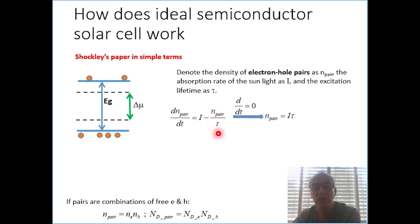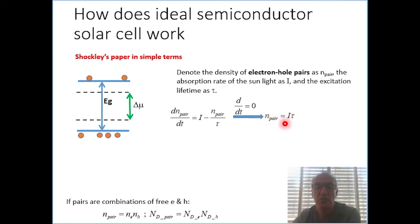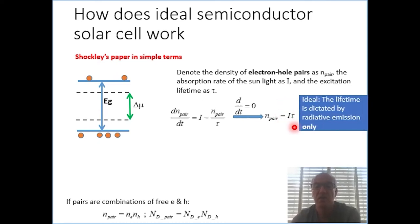As I said before, we are typically interested in the steady state, so we can nullify the left side of the equation. We can see that the charge density of the pairs is indeed an equilibrium or steady state between the excitation and recombination events. And if we are discussing the ideal device, then this lifetime is dictated only by radiative emission events.